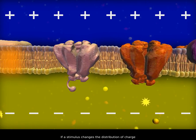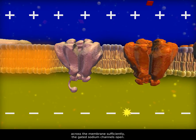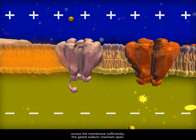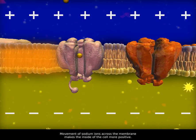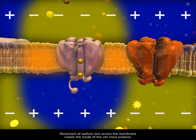If a stimulus changes the distribution of charge across the membrane sufficiently, the gated sodium channels open. Movement of sodium ions across the membrane makes the inside of the cell more positive.